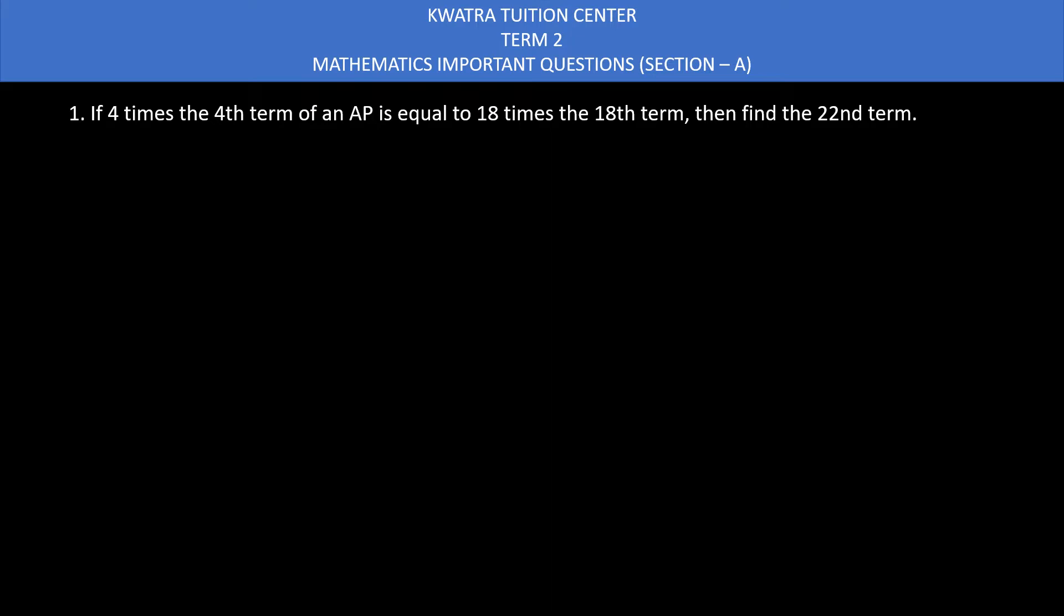So first question, let's see what is given. If 4 times the 4th term of an AP is equal to 18 times the 18th term, then find the 22nd term.